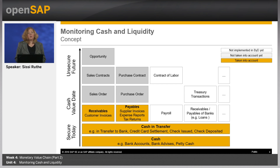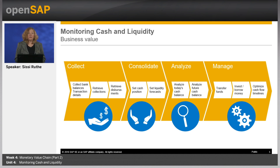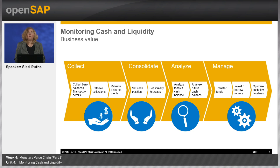What is the business value of monitoring cash and liquidity? Liquidity information is automatically collected and aggregated, achieving better transparency to manage the liquidity position. Based on reports like the daily cash position or liquidity forecasts, you can analyze your actual and future cash balance and optimize your liquidity position by strategies like investing or borrowing money, transferring funds, or optimizing cash flow timelines.